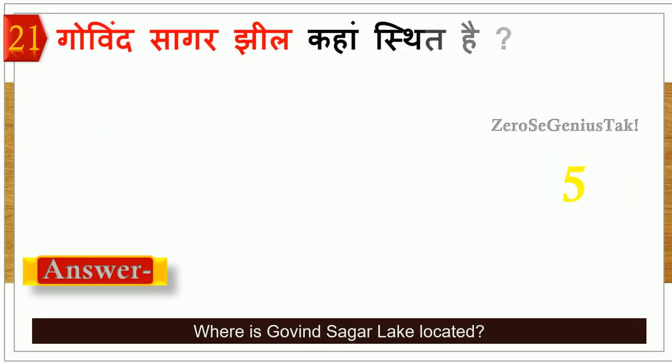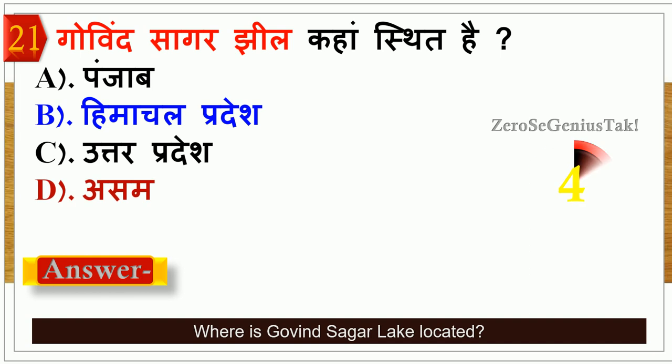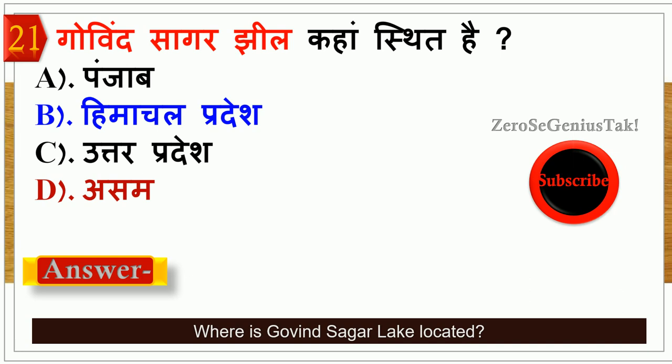Next question — गोविंद सागर कहाँ स्थित है? Punjab, Himachal Pradesh, Uttar Pradesh, या Assam? जिसका सही जवाब था option number B — हिमाचल प्रदेश।